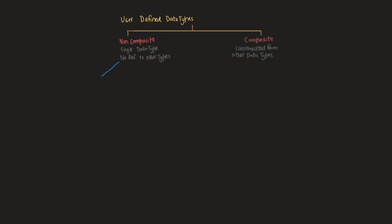You might be aware of some of the basic non-composite data types: integers, Boolean, real, character, and string. But in addition to these, we will be looking at two new ones, which are enumerated and pointers.